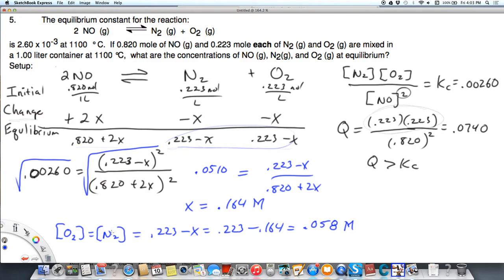So that's my concentration at equilibrium of O2 and N2. And then the concentration of NO is equal to 0.820 plus 2X, so that's going to equal 0.820 plus 2 times 0.164, that was the X we solved for, and that equals 1.15 molar.